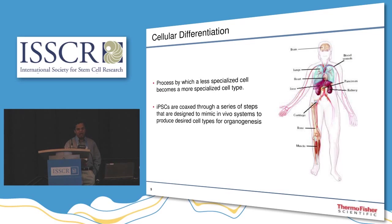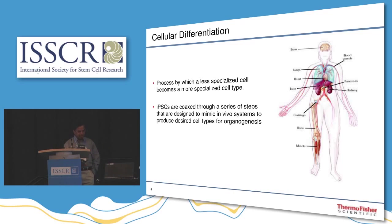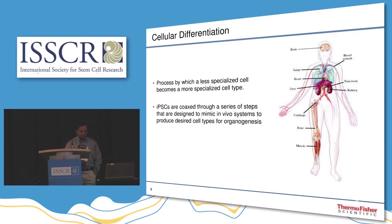I'll be focusing on differentiation — what we are doing and how these reagents are helping. So what is cellular differentiation? Very simply, it is converting a less specialized cell into a more specialized cell. In other words, taking a stem cell and getting it differentiated into a functionally mature cell type is the process of differentiation.